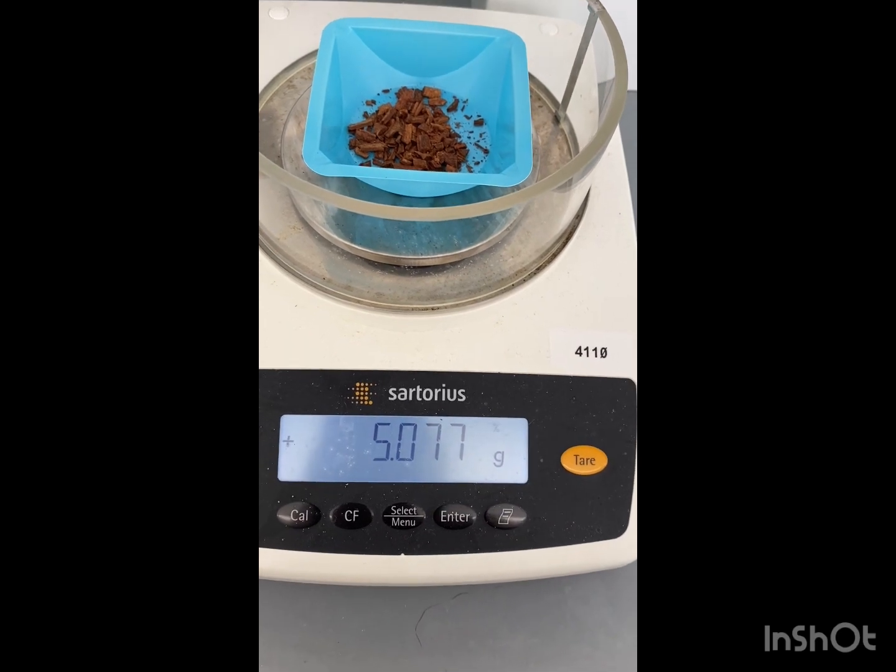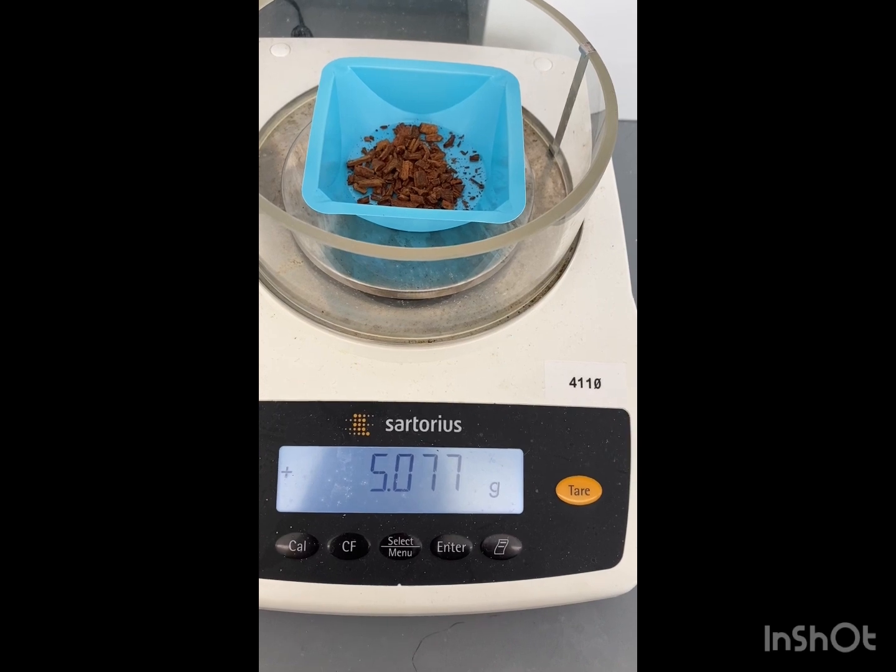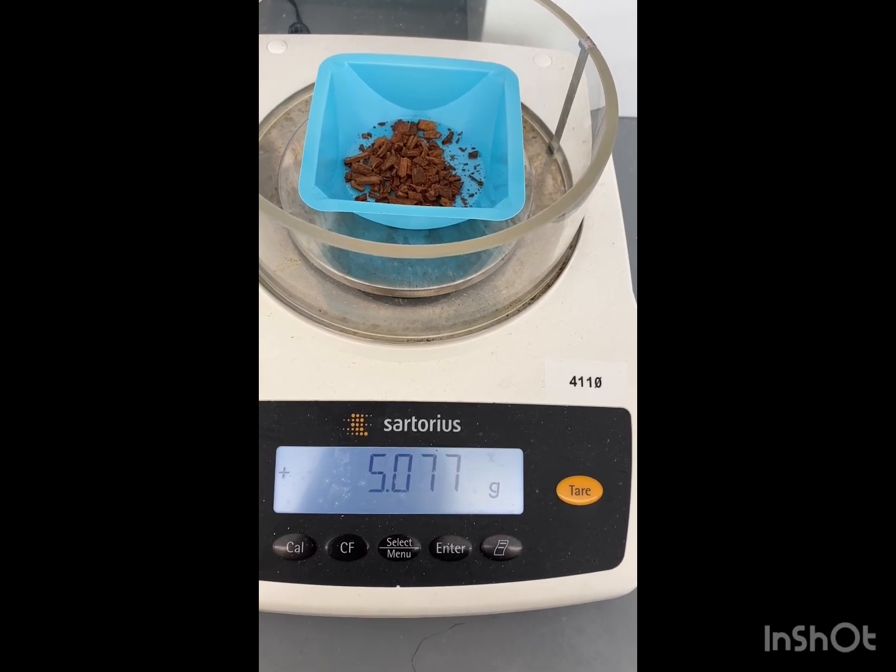So we have a mass of 5.077 grams. We're going to add this to our 200 or 250 round bottom flask.